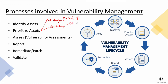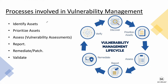You can name asset groups based on criticality, business units, or exposure — such as internet-facing or not internet-facing. The naming convention is up to you. Once assets are prioritized into groups, you can determine the frequency of scanning. For example, a critical asset might be scanned on a weekly basis, while a less critical one might only need monthly scans.